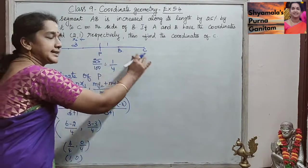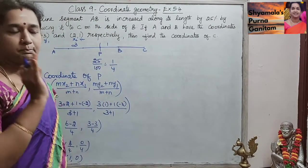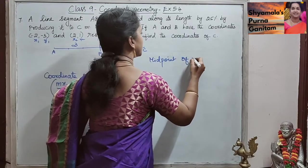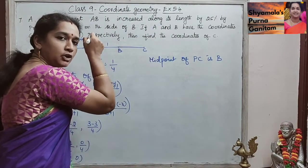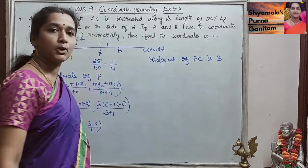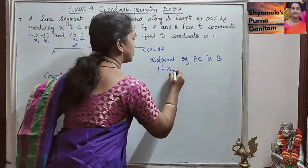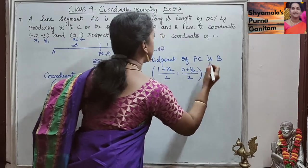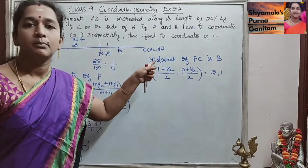Now, midpoint of PC is B. Since the same increment applies, P will be the midpoint — so midpoint of PC is B. We use the midpoint formula. P is (x₁, y₁) = (1, 0) and C is (x₂, y₂) which we have to find. The midpoint formula gives: (x₁ + x₂) / 2, (y₁ + y₂) / 2. Since B is the midpoint and B coordinates are (2, 1), we equate accordingly.